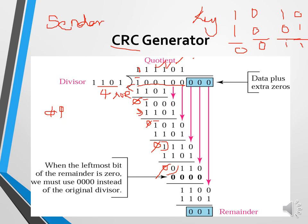When the leftmost bit of the remainder is 0, we must use 0000 instead of the original divisor. Continuing the division: the next leftmost bit is 1, so quotient is 1, multiply 1101 by 1 giving 1101. The final remainder is 001. This remainder, 001, is called the CRC. All the work so far has been done on the sender's side.